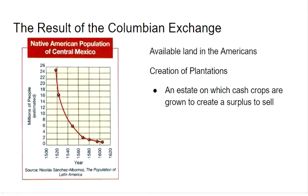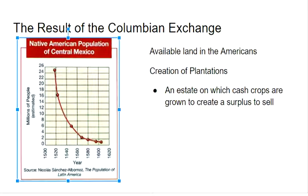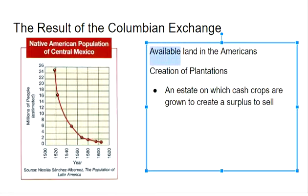Another result of the Columbian Exchange that we looked at in class was the decrease of the Native American population, mostly because of diseases. As you look at this image, we see that over 100 years, about 24 million people just in central Mexico died, mostly due to disease. So what this meant is that there was available land in the Americas.